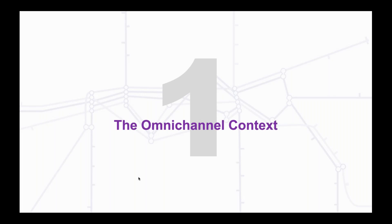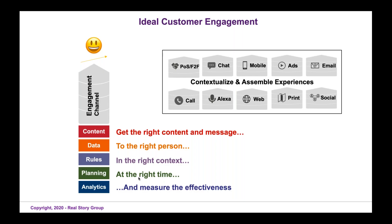I'll start with just a little bit of context. We all have different engagement channels like you see on the left, and in those channels you want to have the right content and message — which is what we're talking about today in the red box — but to the right person. So you need customer data in the right context, which means you need rules, decisions, and perhaps personalization at the right time. You need some operational planning and ultimately the ability to measure effectiveness, so you need analytics. The challenge is that there are many different places on the right — point of sale, chat, your website, ads, different applications, e-commerce — where you want to contextualize and assemble these experiences.